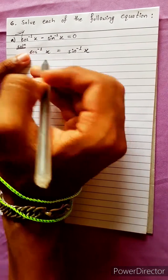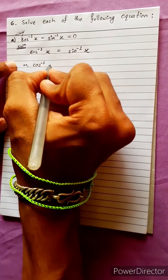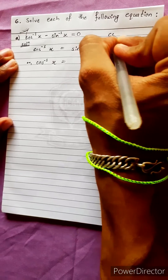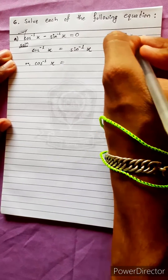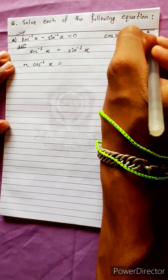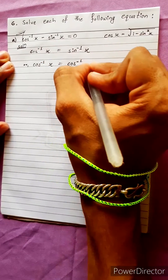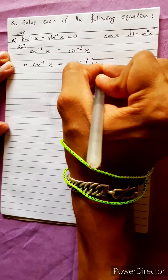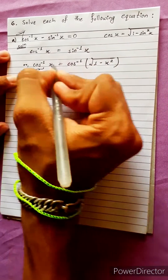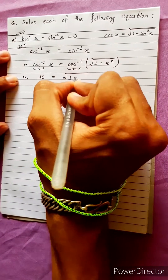The sin inverse formula can be expressed in terms of cos. Using the identity, cos x equals under root 1 minus sin square x, we can write cos inverse x equals under root 1 minus sin square x. Substituting, cos inverse x equals under root 1 minus x square.